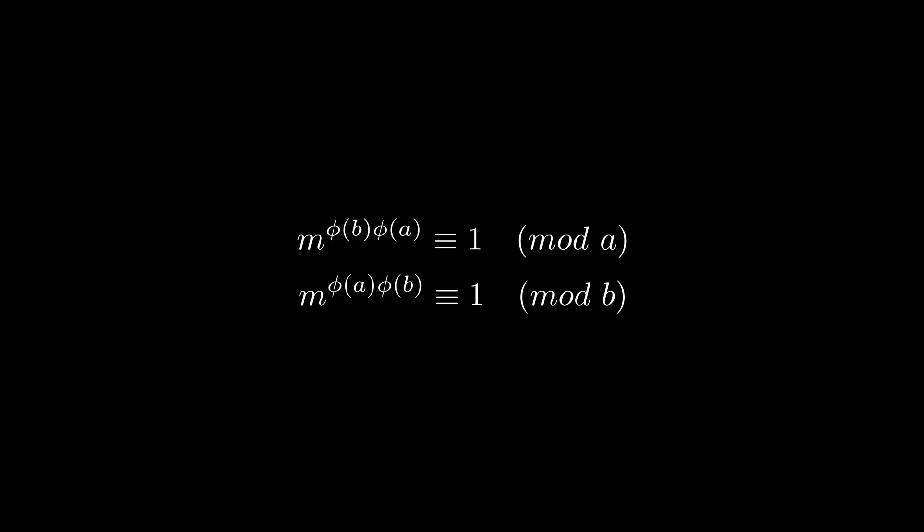For any number m, this is simultaneously one more than a multiple of a and one more than a multiple of b. Therefore, this number is also one more than a multiple of a and b, or one mod ab. From this, we can find a general rule, totient ab equals totient a times totient b.